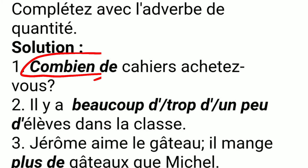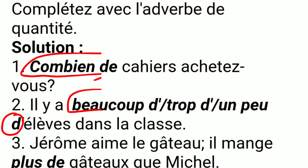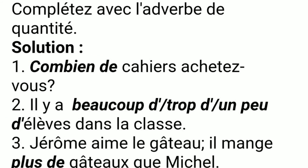Next: Il y a — beaucoup de, trop de, un peu de — élèves dans la classe. Note that these forms use an apostrophe because vowels cannot come together, so the 'e' gives up its vowel in the form of an apostrophe. These all mean very much, less, or very little — something like that.